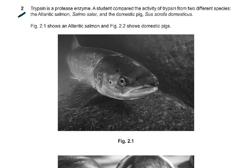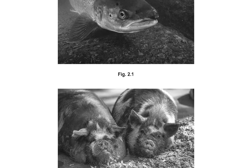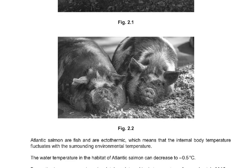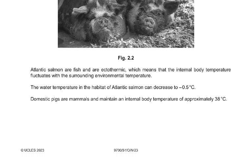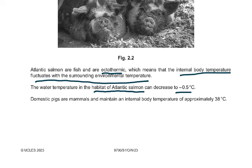Question 2. Trypsin is a protease enzyme. A student compared the activity of trypsin from two different species: Atlantic salmon (SS) and the domestic pig (SSD). Figure 2.1 shows an Atlantic salmon and figure 2.2 shows the domestic pig. Atlantic salmon are fish and are ectothermic, meaning their internal body temperature fluctuates with the surrounding environmental temperature — just like lizards disappearing in winter and reappearing in summer. The water temperature in the habitat of Atlantic salmon can decrease to minus 0.5 degrees Celsius. Domestic pigs are mammals and maintain an internal body temperature of approximately 38 degrees Celsius.